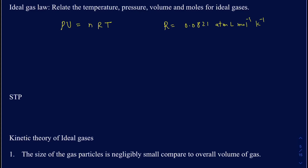So R is a constant, but then you have four other variables: pressure, volume, moles, and temperature. You could be given any three and asked for the fourth. Since we're using R, you want to make sure pressure is in atmospheres and volume is in liters. In the simple gas laws, it didn't matter what units you used as long as both sets matched.